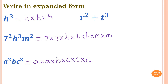R squared plus T cubed in expanded form. R squared is R times R. And T cubed, or T to the power of 3, is equal to T times T times T.